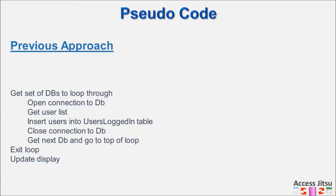Let's take a look at the high-level approach we're taking in getting the user lists from the databases we're monitoring. In our previous approach, I set up a loop where we got a list of the databases we're monitoring, and for each one we opened a connection to it, got the user list, inserted those users in a users login table, and then closed the connection to that database.